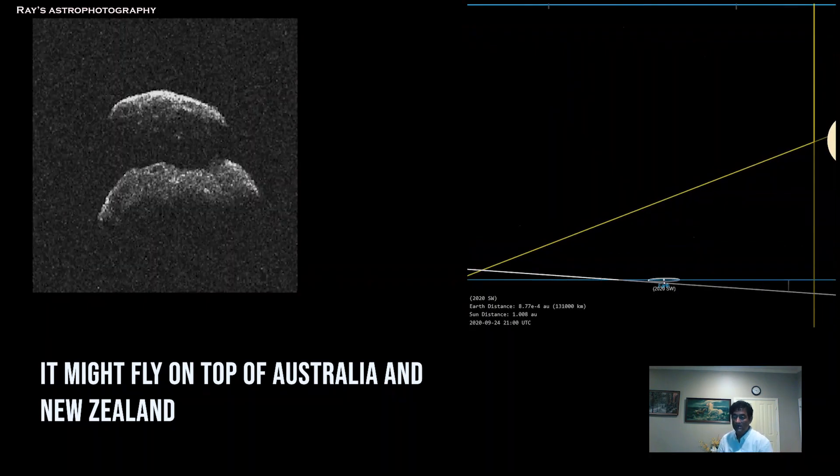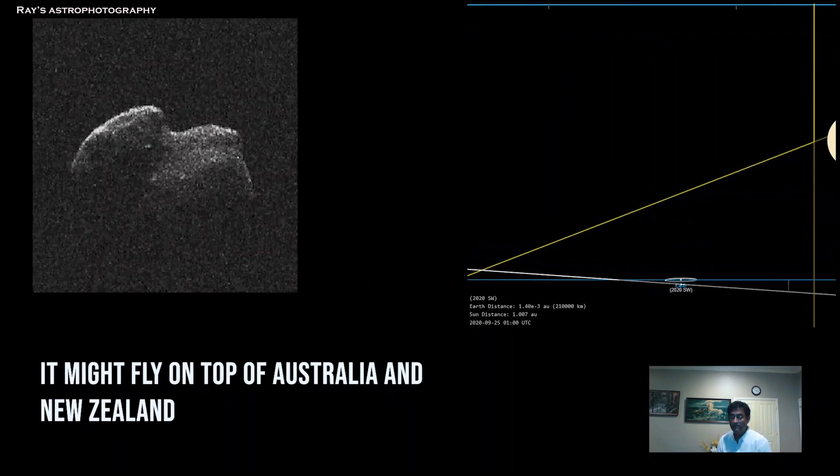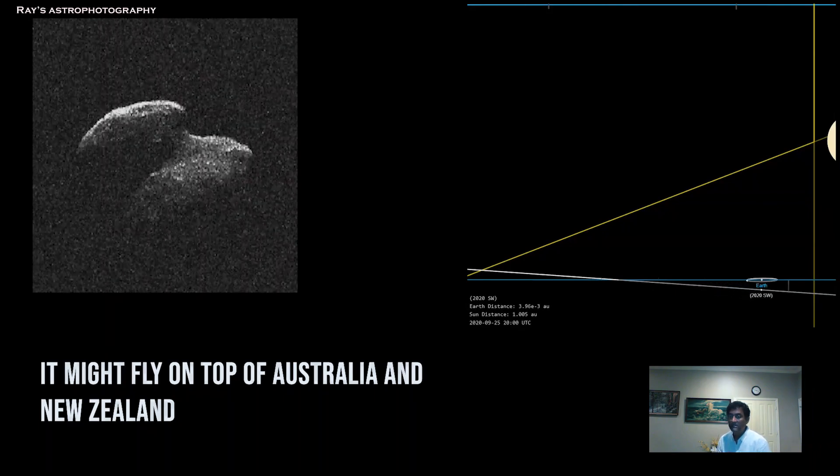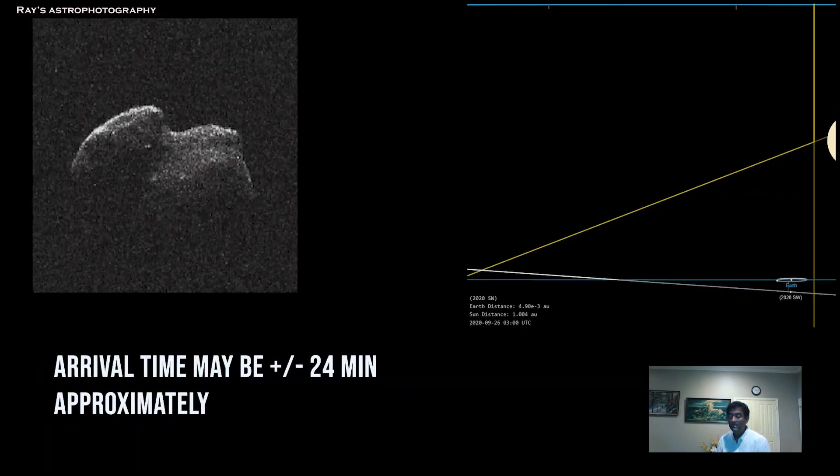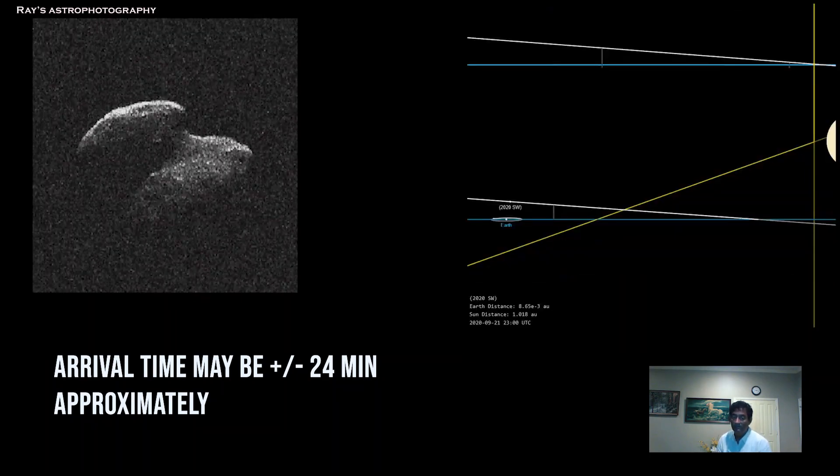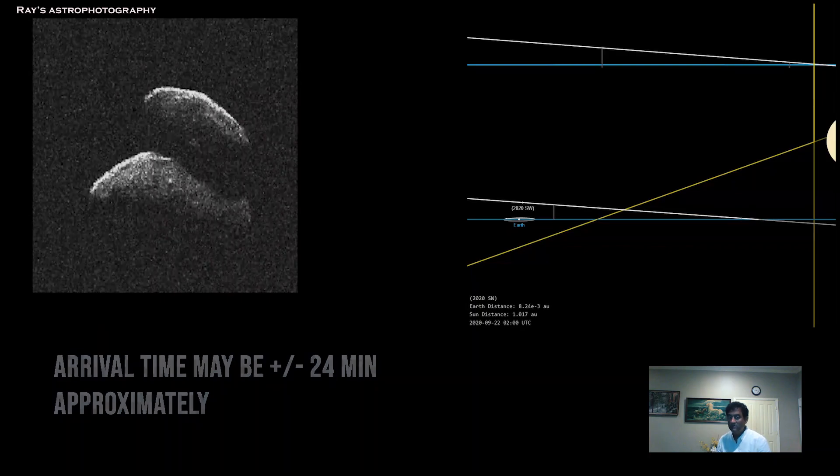The uncertainty of this asteroid is actually the time itself. It might vary plus or minus 24 to 25 minutes before or after.